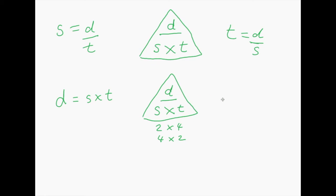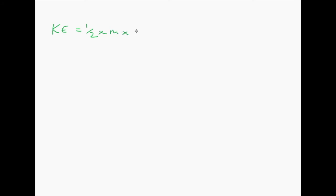I've got one space and one thing — shove that thing in that space — and you'll realize you get exactly the same magic triangle. The rule is: just cover up what you're looking for and what you're left with is how to work it out. If we want distance, cover up distance and you're left with speed times by time. Now, what if there are four things? Say you've got kinetic energy equals a half times by the mass times by the velocity squared.